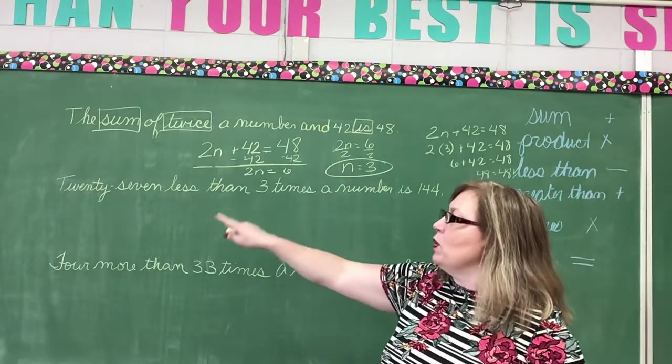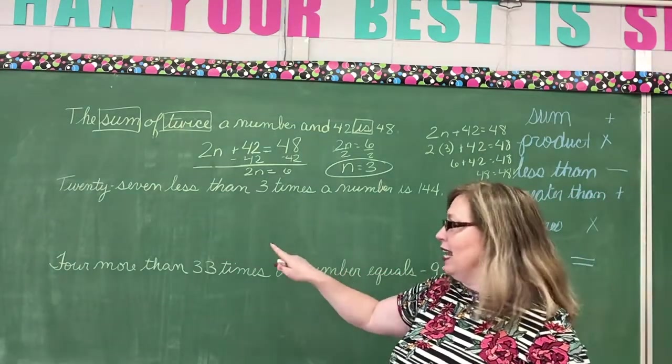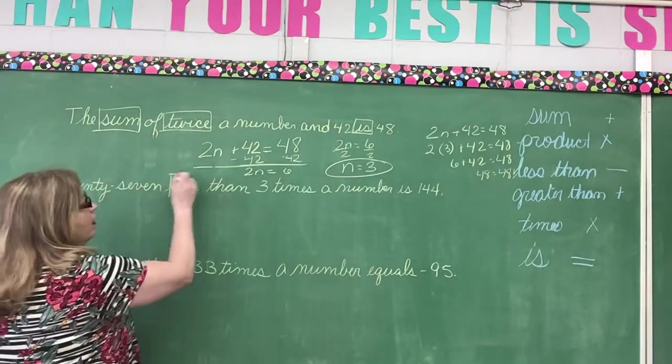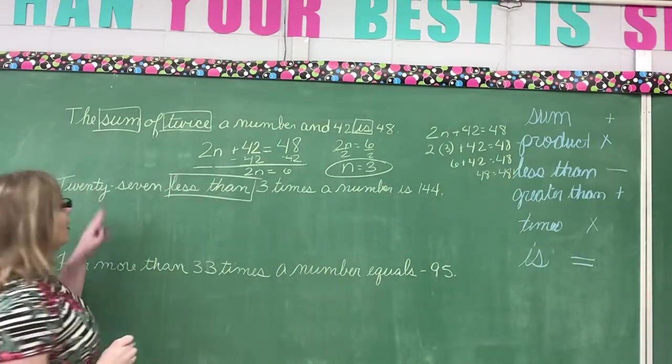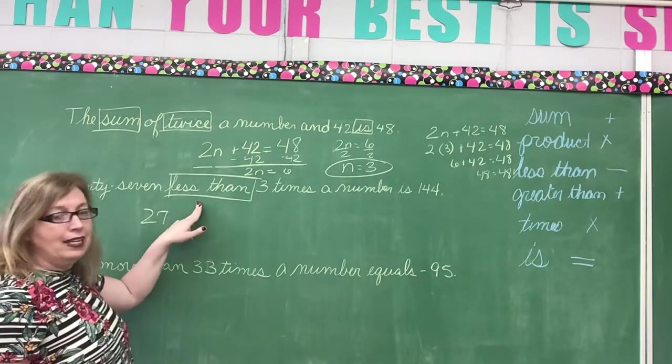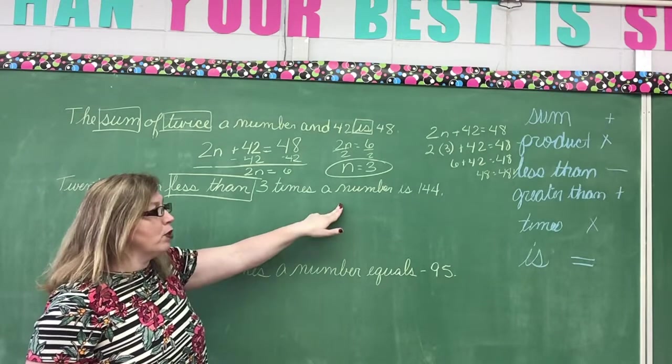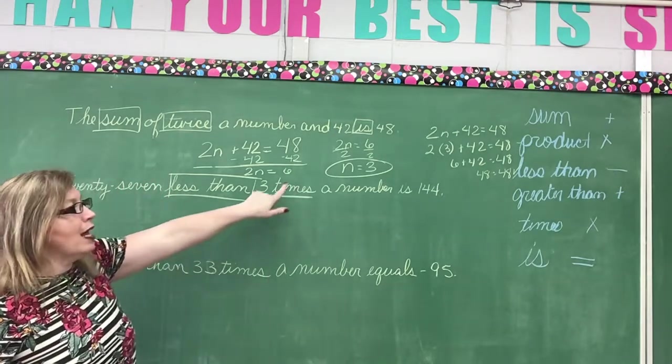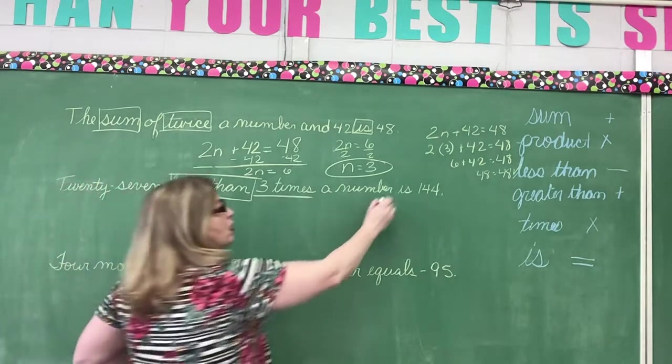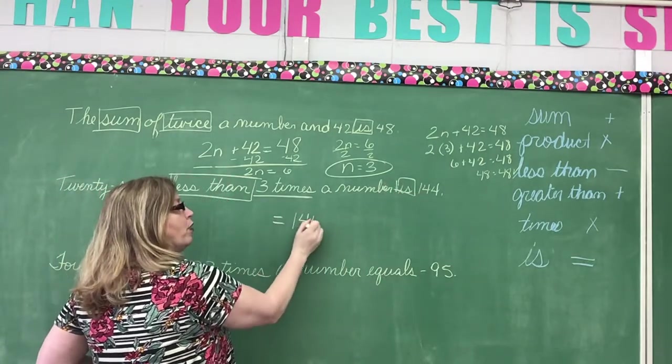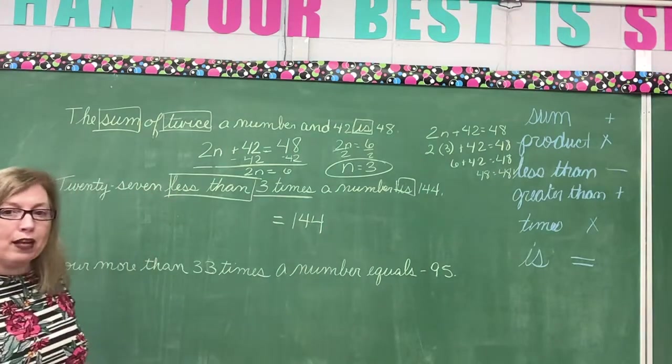Look at the next one. 27 less than. Key word is so far less than. Okay. So I have 27 less than three times a number. Okay. Three times. I'm going to raise that 27 for a second. Three times a number is 144. Well let's write the is 144. Now let's go back and look at our problem.